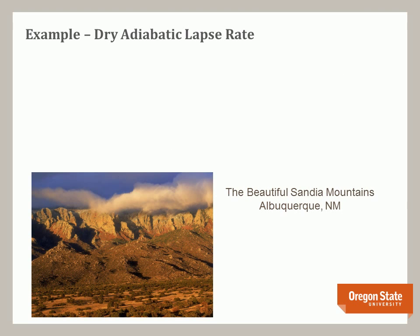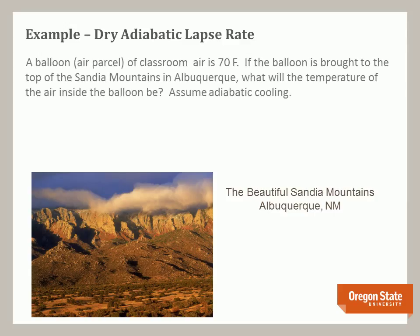Now let's do an example using the dry adiabatic lapse rate. Note that this problem has a New Mexico flair — here's a picture of the beautiful Sandia Mountains outside of Albuquerque, New Mexico. Here's the question: a balloon or air parcel of classroom air is 70 degrees Fahrenheit. If the balloon is brought to the top of the Sandia Mountains in Albuquerque, what will the temperature of the air inside the balloon be? Assume adiabatic cooling, which means there's no input from the surrounding air mass.